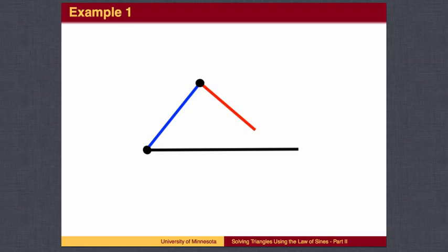In this animation, we are given the angle formed by the blue and black sides, which will stay fixed. We are also given the lengths of the blue side and the red side. We will need to find the angle formed by the blue and red sides, the angle formed by the red and black sides, and the length of the black side.